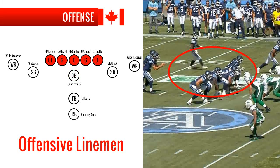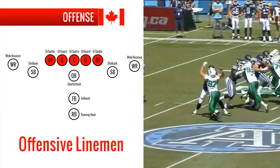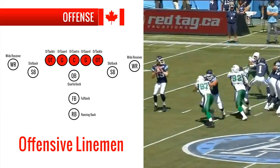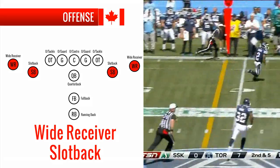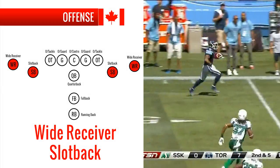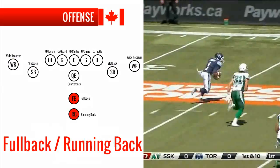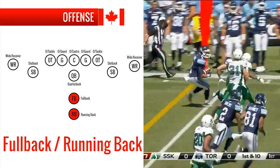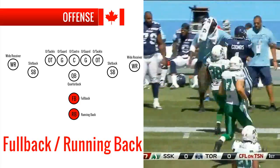The offensive line positions are usually responsible for protecting the quarterback. The wide receivers and slot backs are responsible for running down the field to catch the ball thrown by the quarterback. The running back and full back are responsible for running with the ball up the field.